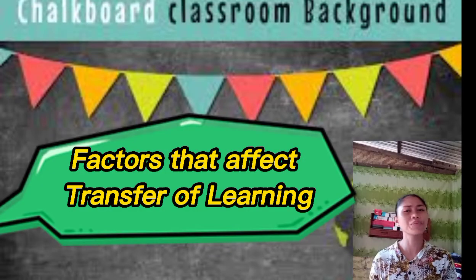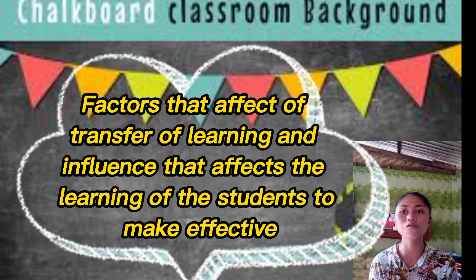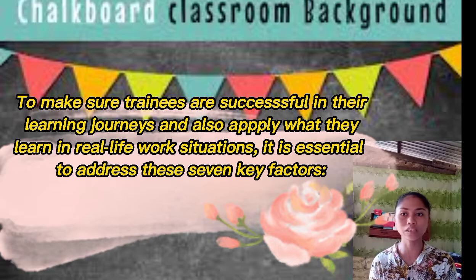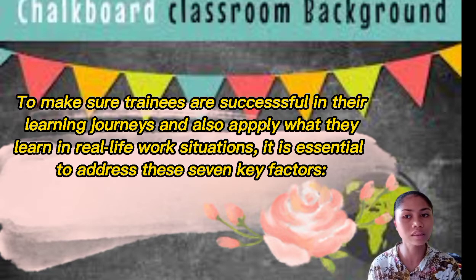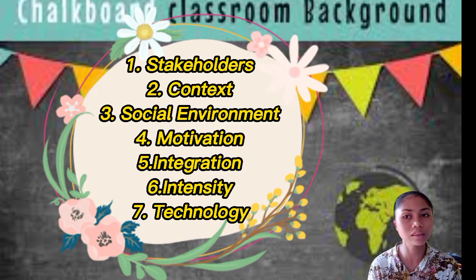Now let's discuss the factors that influence the transfer of learning to make it effective. To ensure trainees are successful in their learning journeys and apply what they learn in real-life work situations, it is essential to address these seven key factors: first, stakeholders; second, context; third, social environment; fourth, motivation; fifth, integration; sixth, intensity; and seventh, technology.